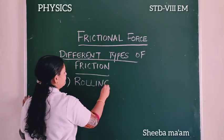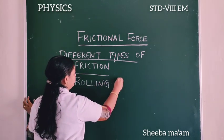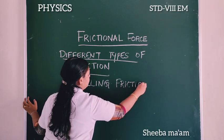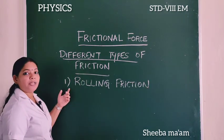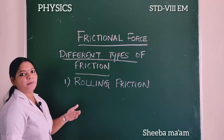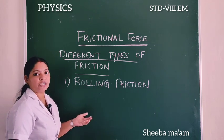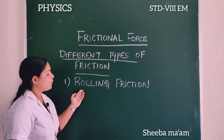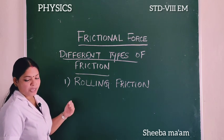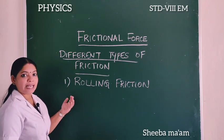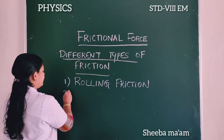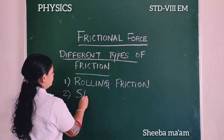Rolling friction: when a wooden log rolls, the friction that originates is called rolling friction. When a wooden log slides, the friction that originates is called sliding friction.